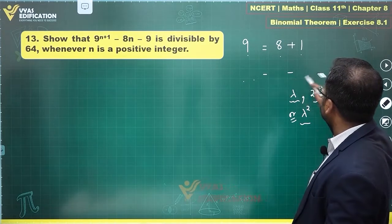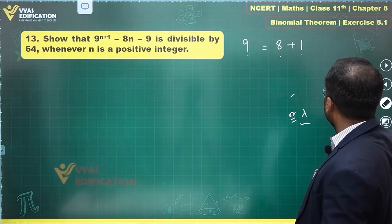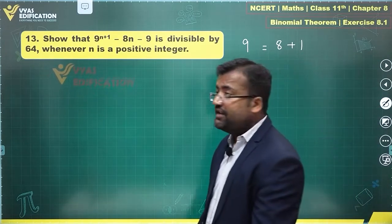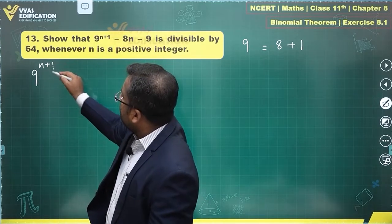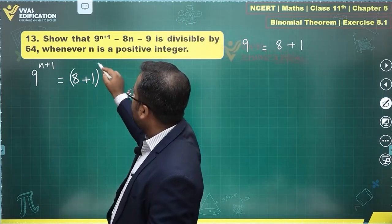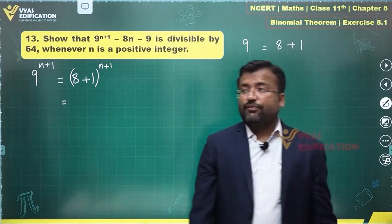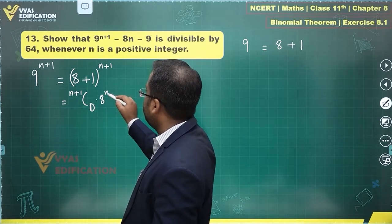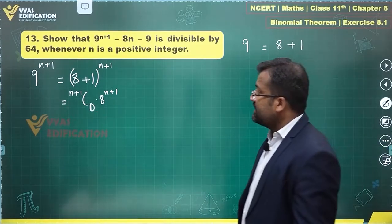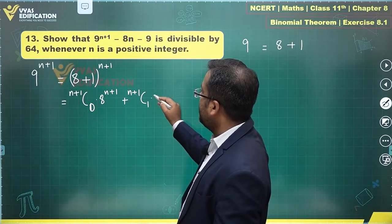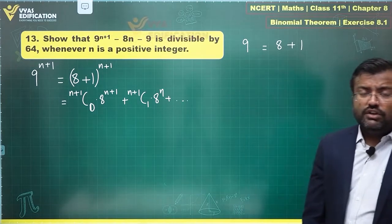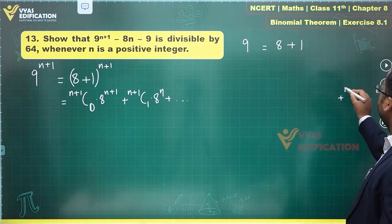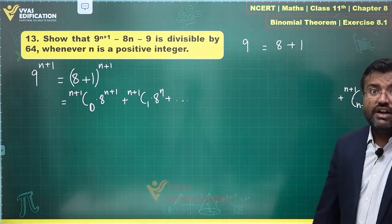Let's solve this question. We write 9 as 8 plus 1, so 9^(n+1) can be written as (8+1)^(n+1). This simplifies using the binomial theorem to: (n+1)C0 · 8^(n+1) + (n+1)C1 · 8^n + ... and similarly many more terms. The last term would be (n+1)C(n+1) · 8^0 · 1^(n+1), which equals 1.